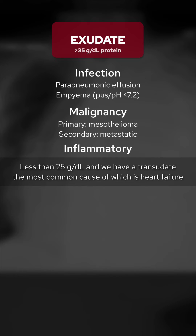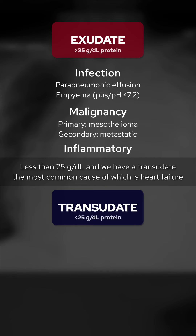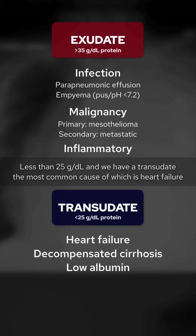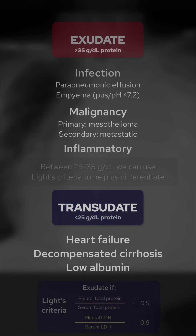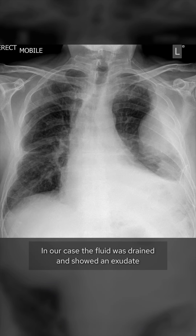Less than 25 grams per deciliter and we have a transudate, the most common cause of which is heart failure. Between 25 to 35 grams per deciliter, we can use Light's criteria to help us differentiate. In our case, the fluid was drained and shown to be an exudate.